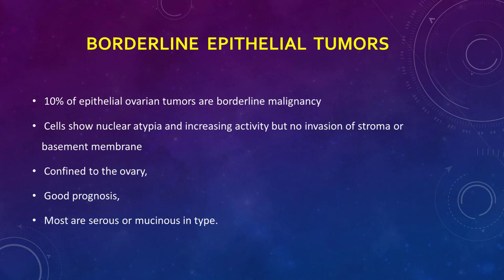The last type is clear cell carcinoma, the least common epithelial ovarian tumor, with very poor prognosis. It is a fatal tumor characterized by clear cells similar to renal cancer, and is often associated with endometriosis and endometrial cancer. Borderline epithelial ovarian tumors account for 10% of epithelial ovarian tumors. They are called borderline because cells show malignant changes and increased activity, but there is no invasion of the stroma or basement membrane. Since there is no invasion, they are confined to the ovary with no wide-spread metastasis and carry a very good prognosis.